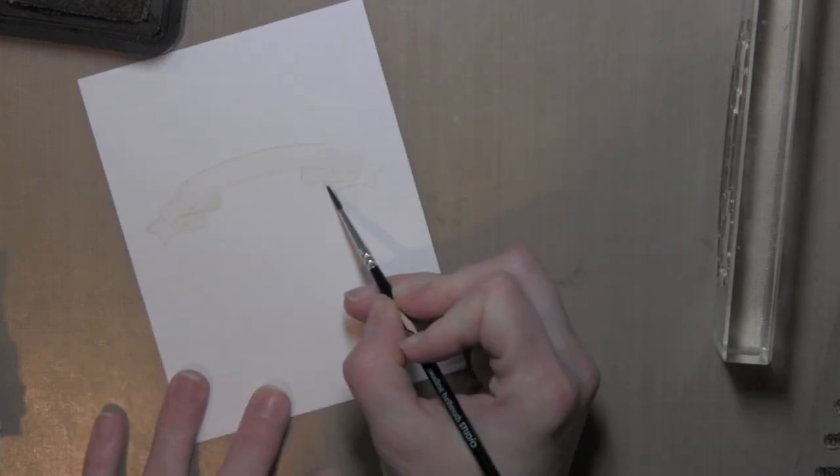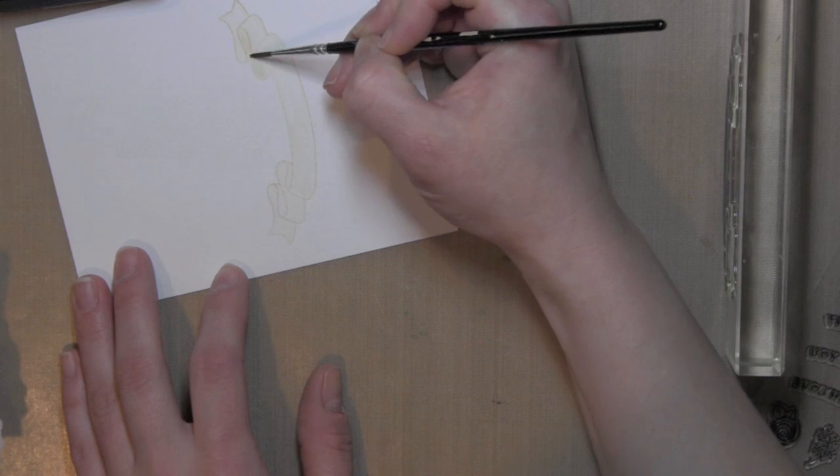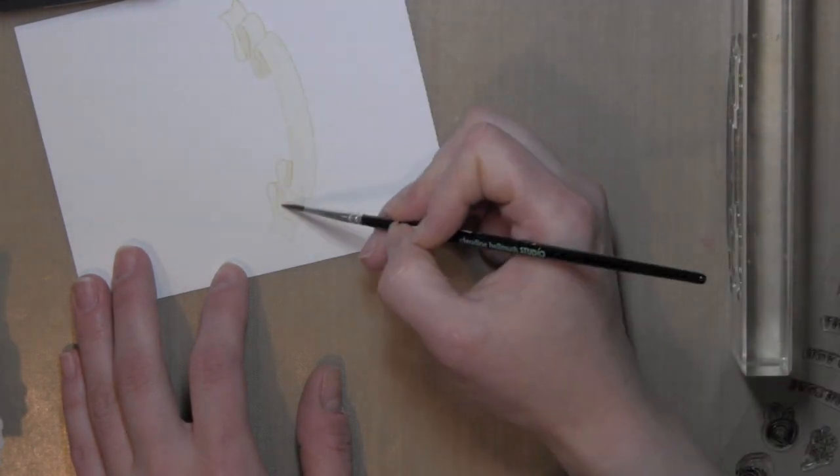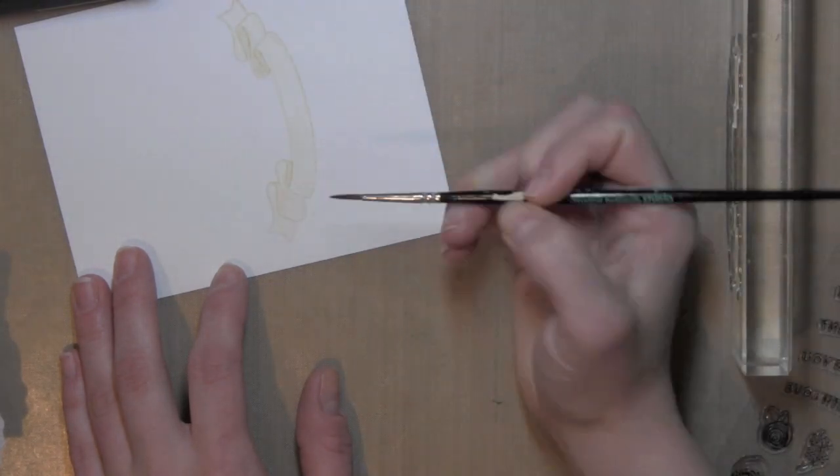I pulled some of that color in from that outside stamp line and then anything I wanted to darken I'm just picking up from my stamp pad and adding some shading. It's a really quick and easy way to watercolor.